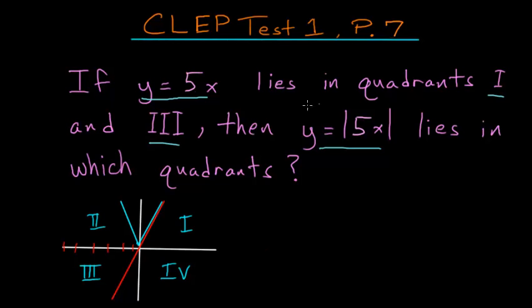And remember, absolute value functions have all positive y values, unless there's a negative sign in front. But in our case, since there's no sign in front, it would have all positive y values. So it would have to be above this x-axis here. So this can only exist in quadrants 1 or 2. So the answer to our question is quadrants 1 and 2.